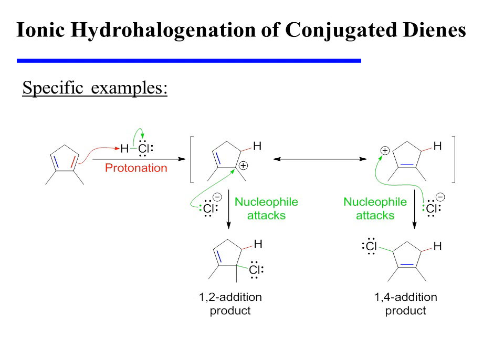The conjugation spreads the positive charge over two centers, each of which bear a partial positive charge as a result. Either center can be attacked by chloride in the second step of the mechanism, affording both the 1,2 and the 1,4 addition product.